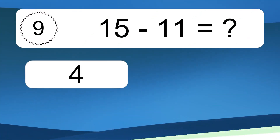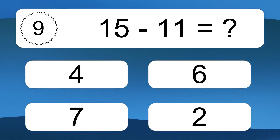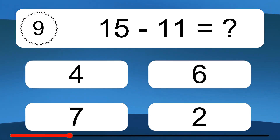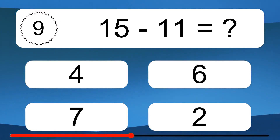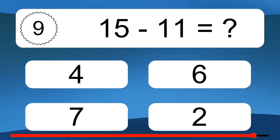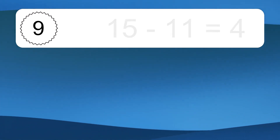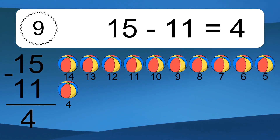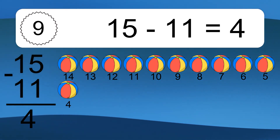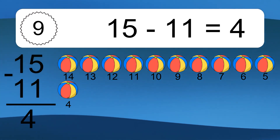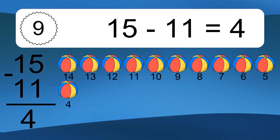15 minus 11 equals what? 15 minus 11 equals 4. Let's count it: 14, 13, 12, 11, 10, 9, 8, 7, 6, 5, 4.